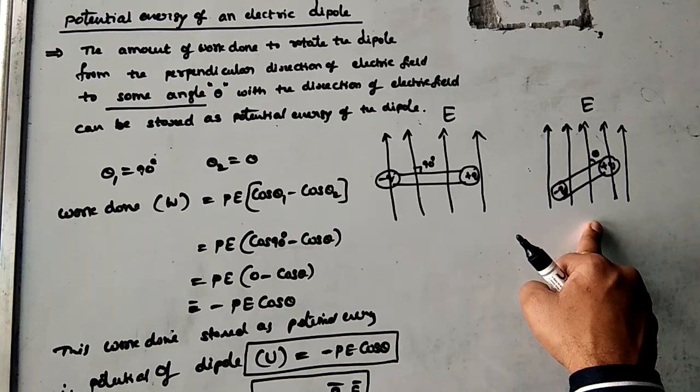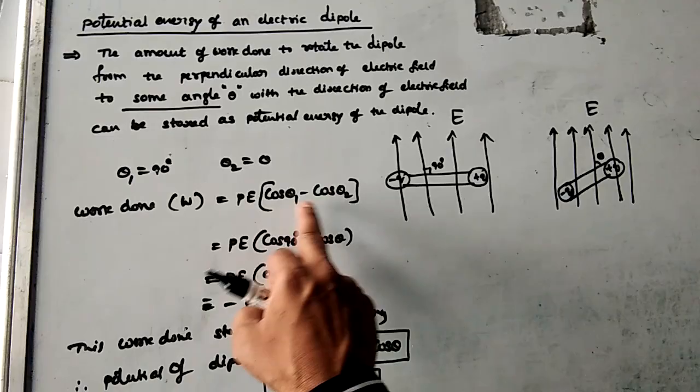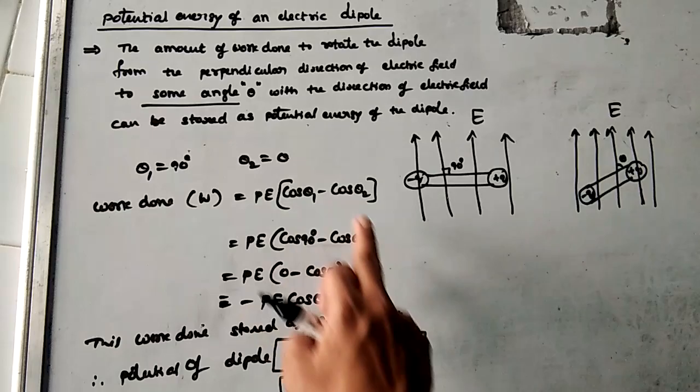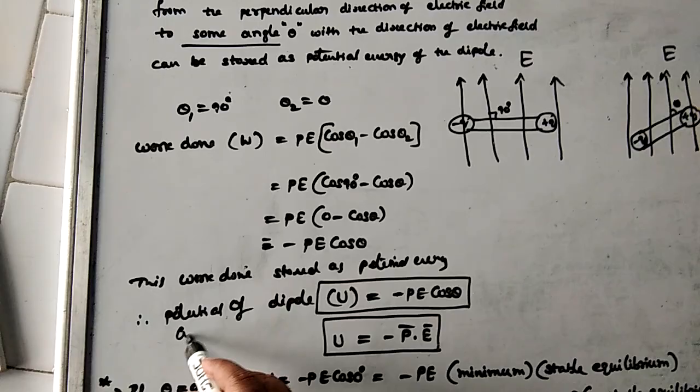Initially the dipole is perpendicular, now it makes an angle theta. Work done is nothing but PE(cosθ₁ − cosθ₂). Substitute θ₁ = 90° and θ₂ = θ, so you will get work done equal to −PE cosθ. As per our definition, this work done is stored as potential energy. Therefore, potential energy of the dipole: U = −PE cosθ.